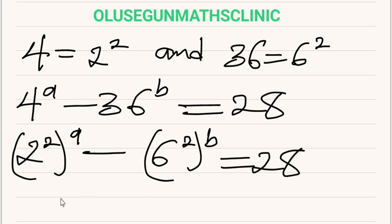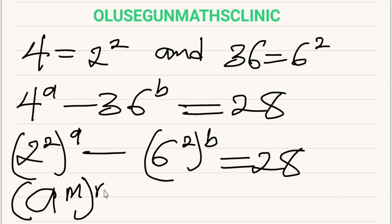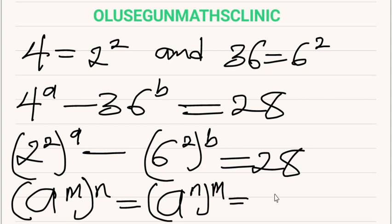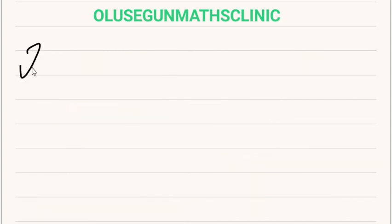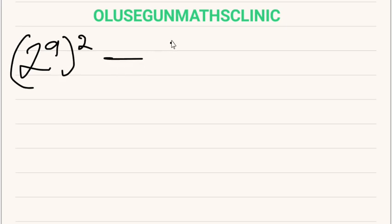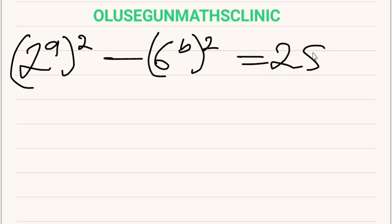For rewriting this, recall the formula that says A raised to power M, raised to power N, can be written as A raised to power M times N. So you can rearrange this to have 2 raised to power 2A minus 6 raised to power 2B is equal to 28, which is 2 raised to power A squared minus 6 raised to power B squared is equal to 28.